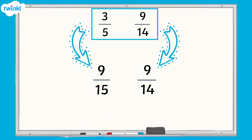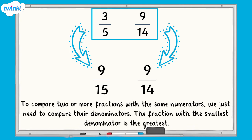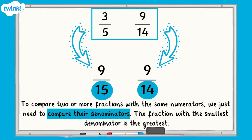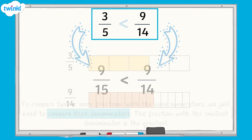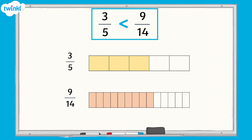Now both fractions have the same numerator, we can easily compare them. Remember this rule: to compare two or more fractions with the same numerators, we just need to compare their denominators. The fraction with the smallest denominator is the greatest. Therefore, nine fifteenths is less than nine fourteenths. As nine fifteenths is equivalent to three fifths, we can also say that three fifths is less than nine fourteenths.